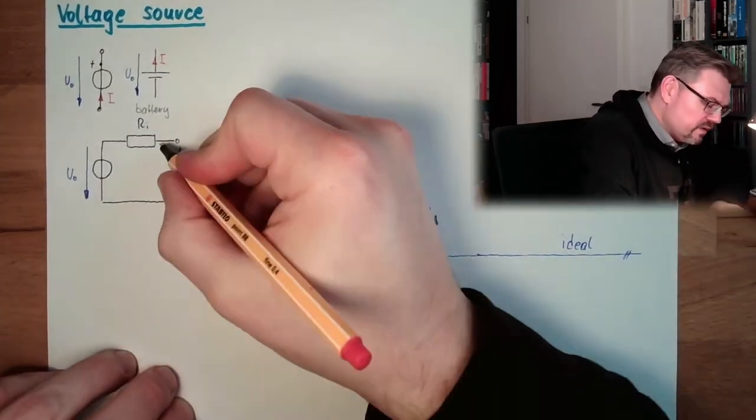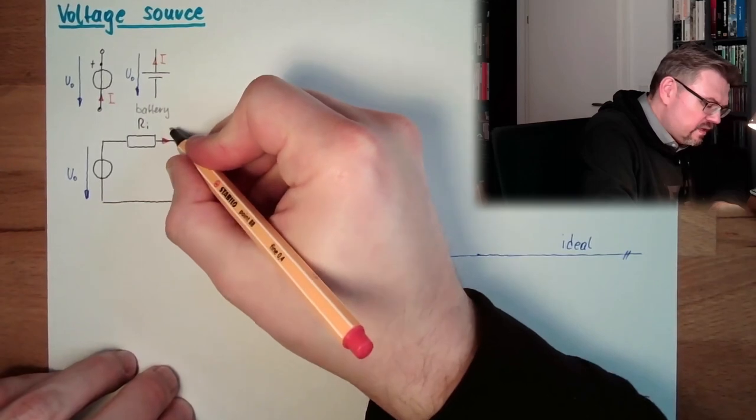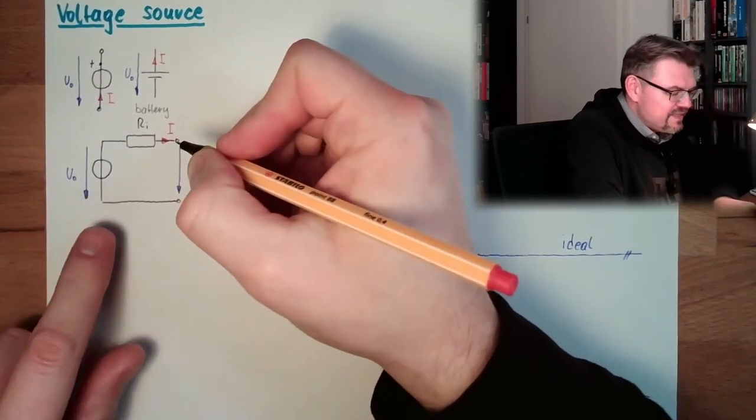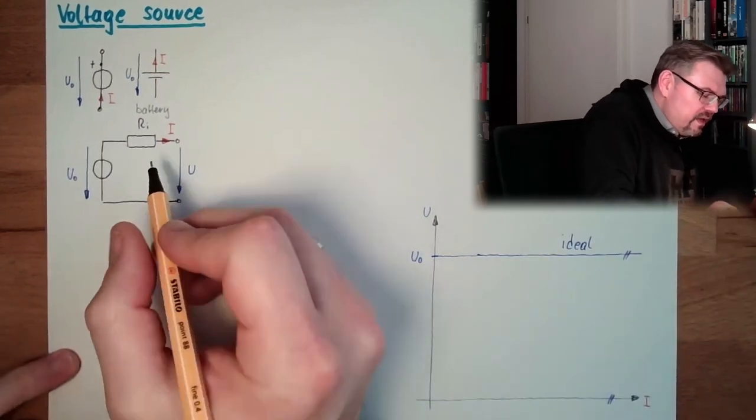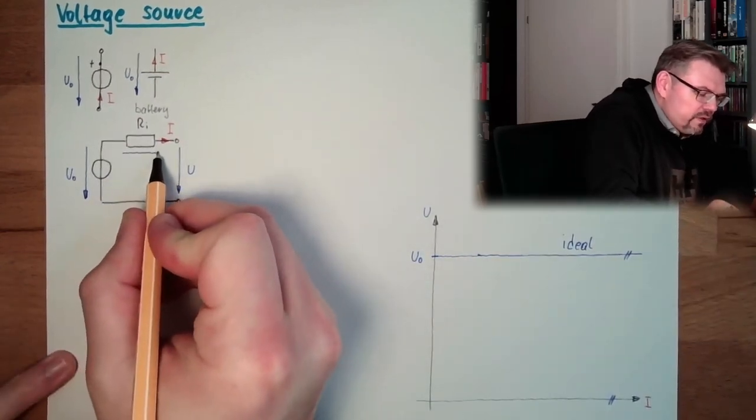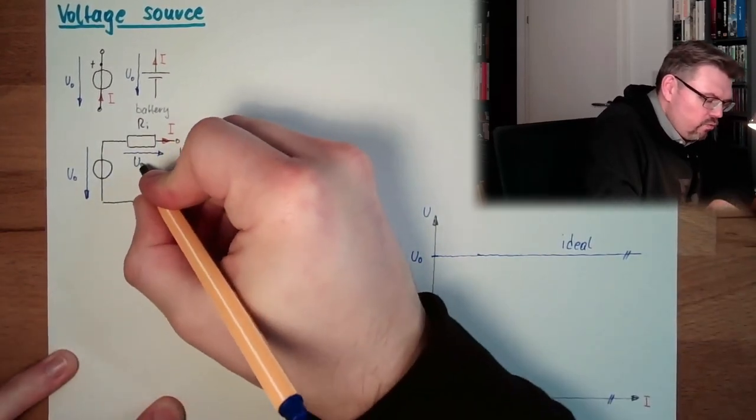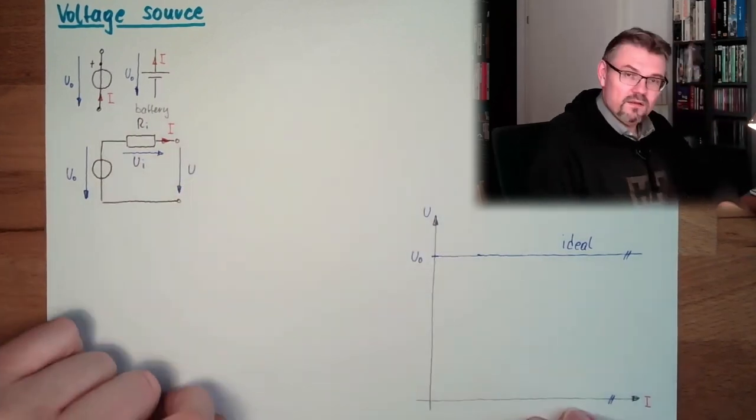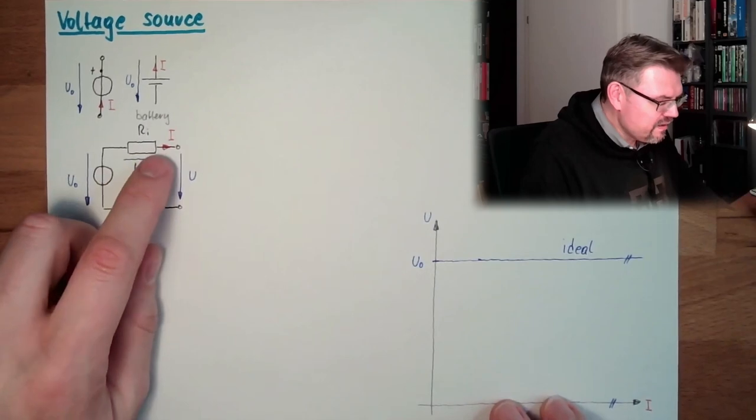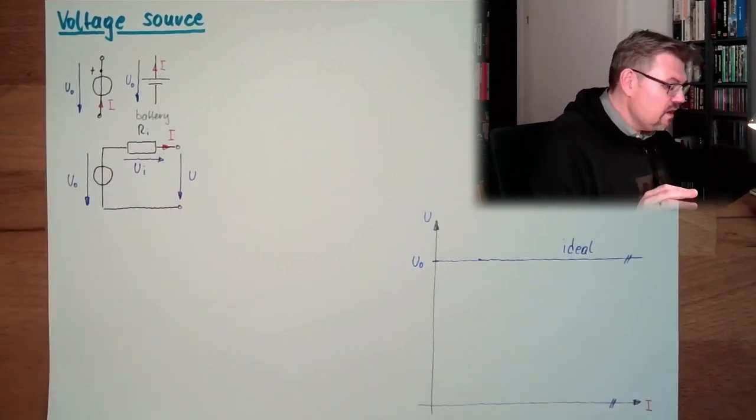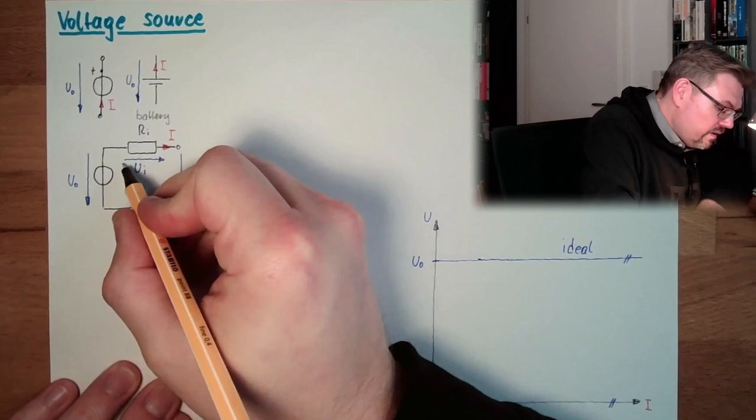This is not U0. Because here there is the current. And since here the current has to pass a resistor, here we have an internal voltage drop, Ui. It's an internal voltage drop. And the bigger... Let's have a look.